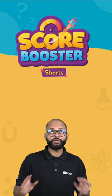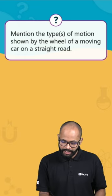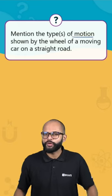Hello everyone, welcome to Skull Boosters. Today I have an interesting question for you. The question says, mention the type or types of motion shown by the wheel of a moving car on a straight road.